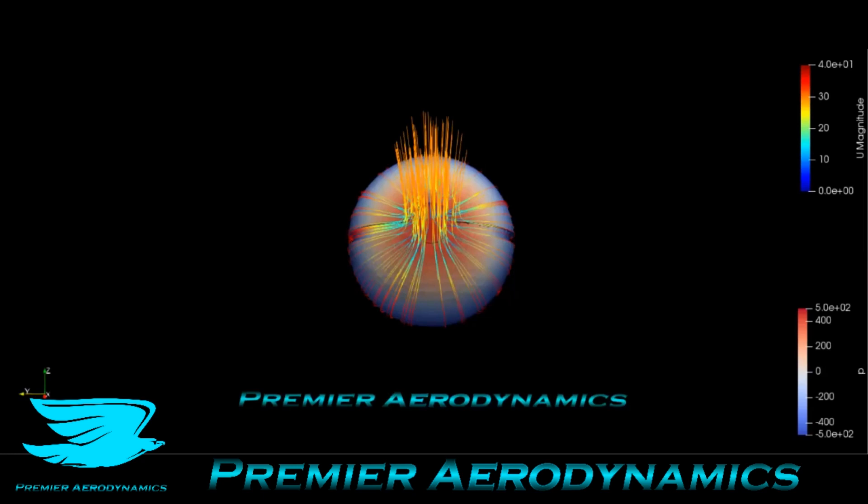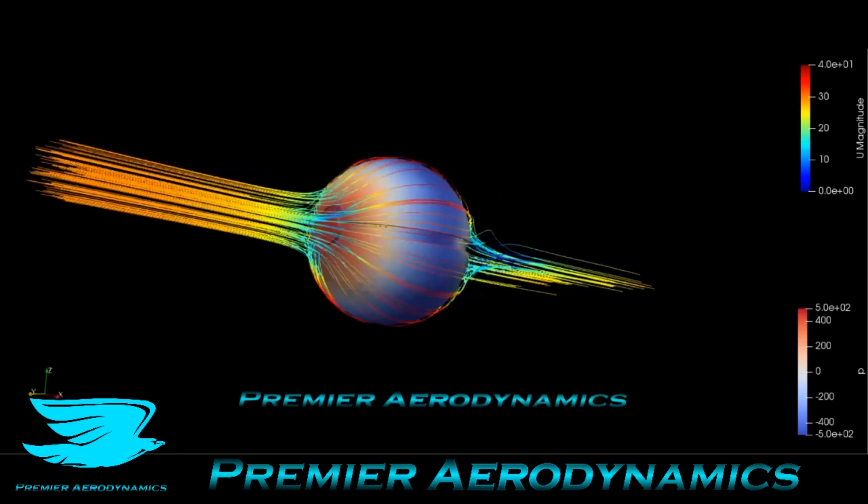What's up, everyone? This is the aerodynamics of a Pokeball, and we have some streamlines going through. The Pokeball is the rotator. You see the streamlines coming from upstream, hitting the Pokeball and going downstream.